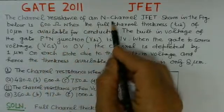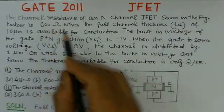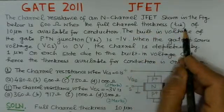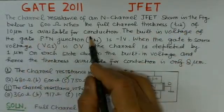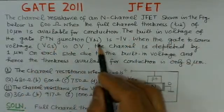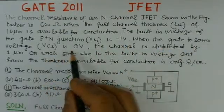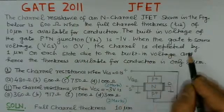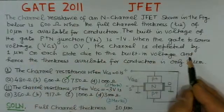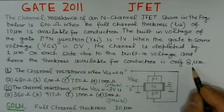The channel resistance of an N-channel junction FET shown in the figure below is 600 ohms, when the full channel thickness TCH of 10 micrometers is available for conduction. The built-in voltage of the gate P-plus-N junction VBI is minus 1 volt. When the gate-to-source voltage VGS is 0 volts, the channel is depleted by 1 micrometer on each side due to the built-in voltage, and hence the thickness available for conduction is only 8 micrometers.